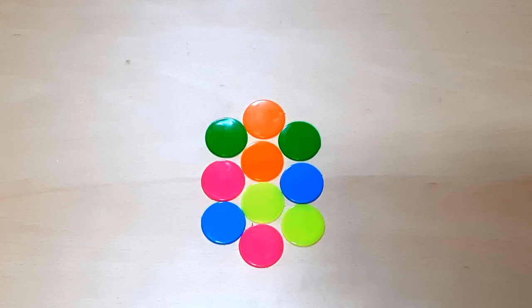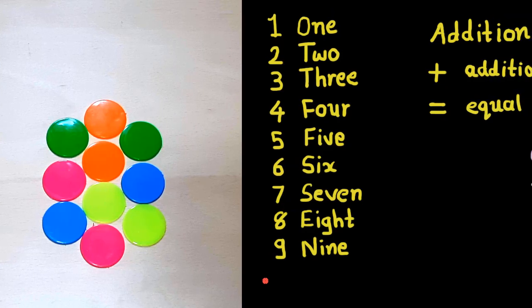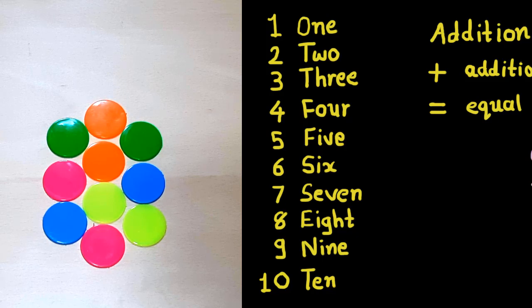Now let's learn how to write 10 in digits and words. See, 1, 0. This is called 10. T, E, N, 10. T, E, N, 10.